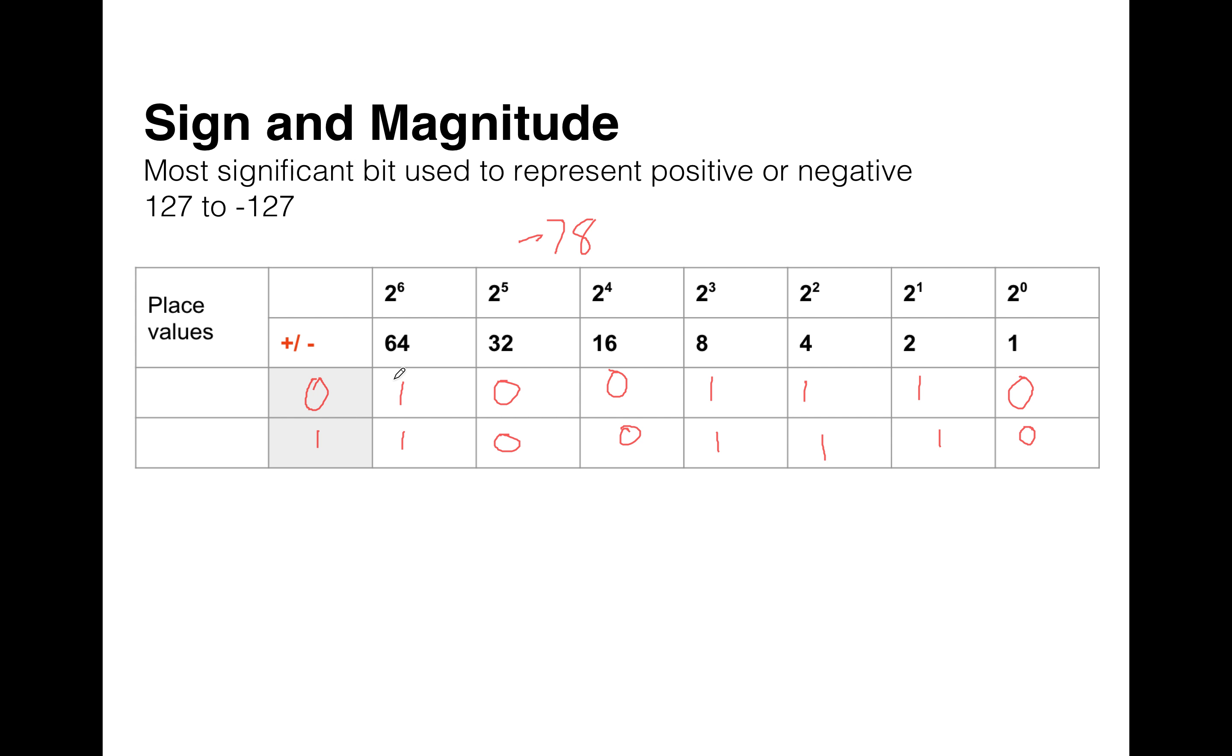We've obviously lost the range that we can represent because it's only 127 to -127. The reason we don't use it very often is that sometimes the additions don't come out with the answers that we want, and that's why we use two's complement for addition, which is in another video.